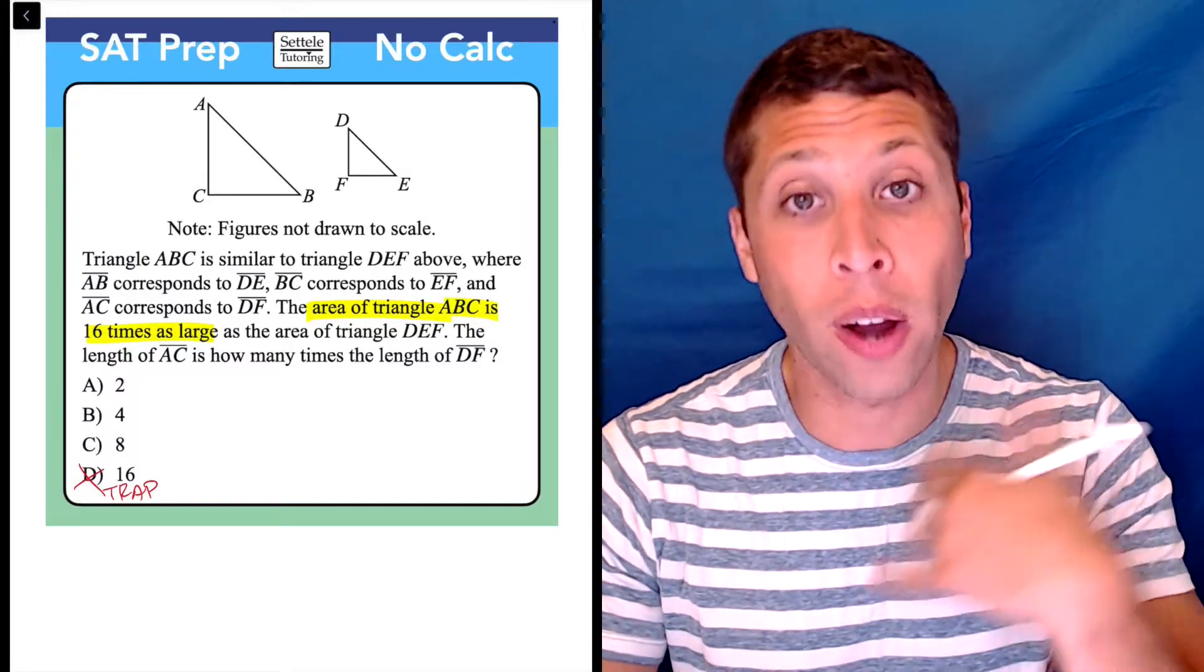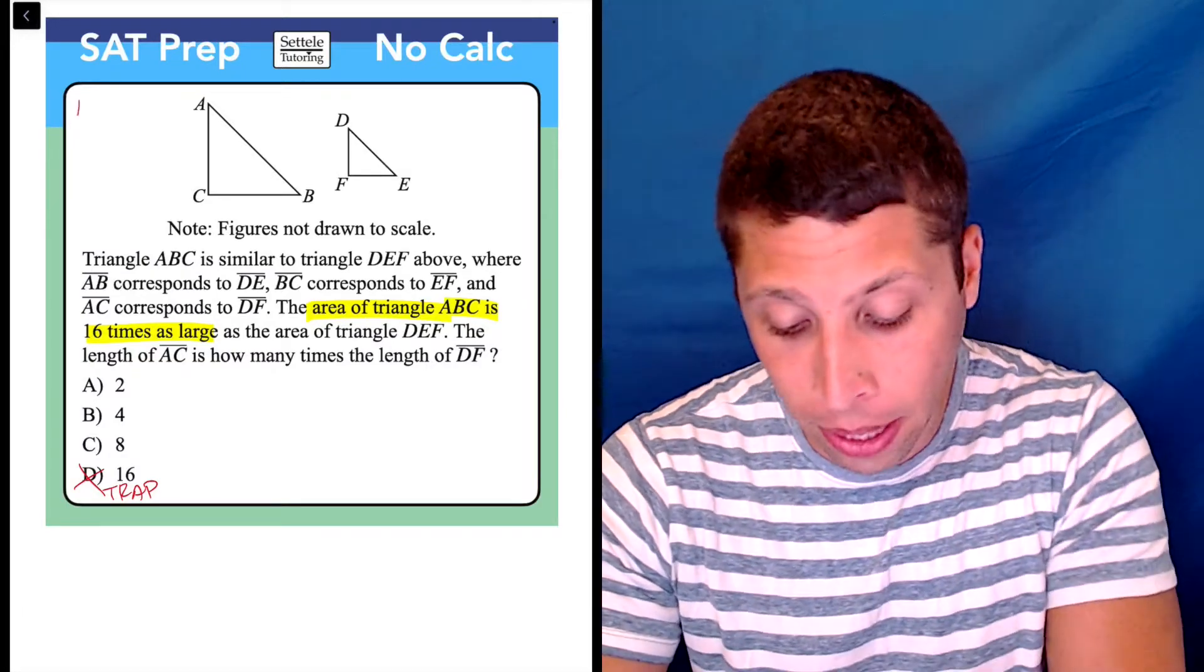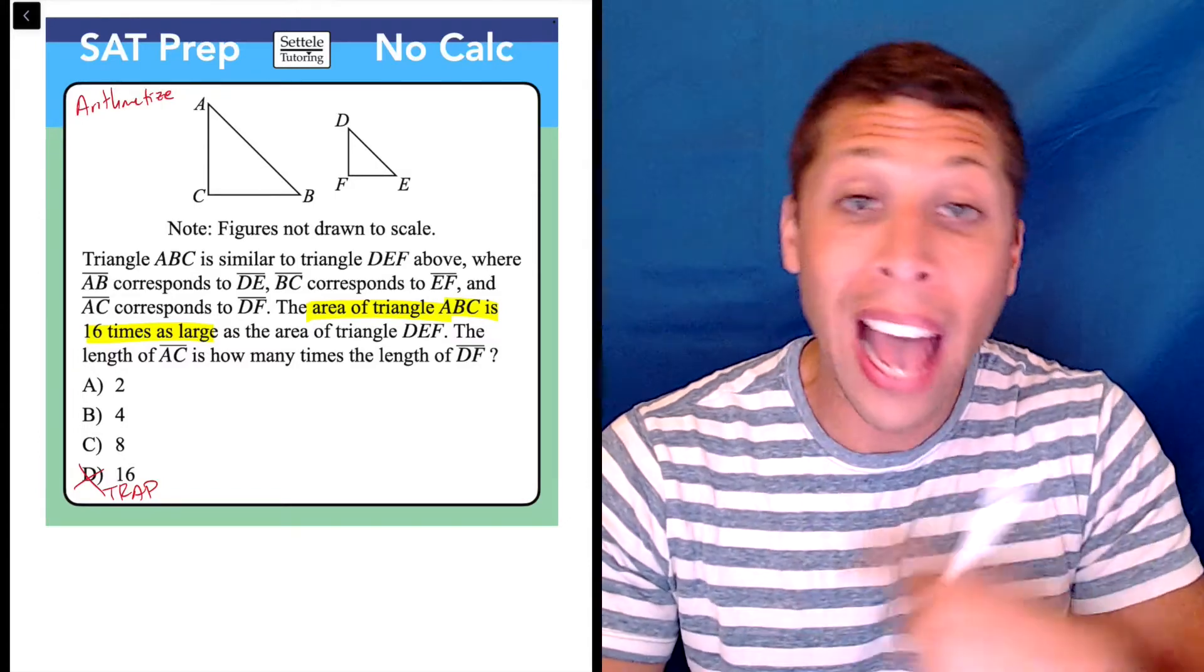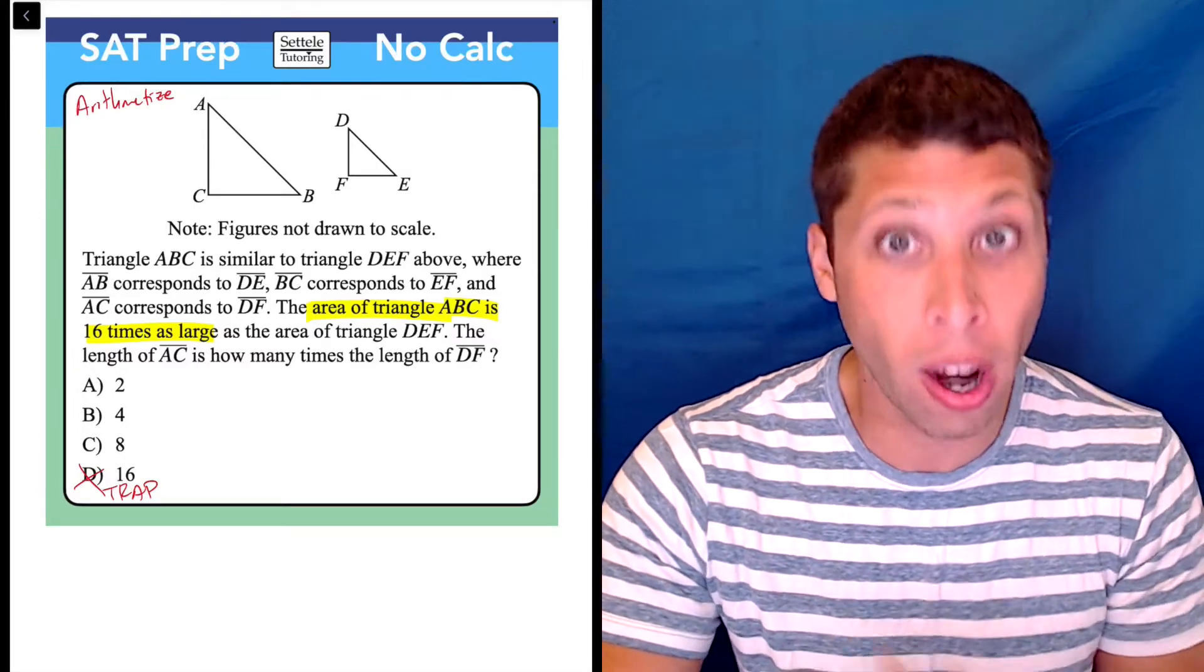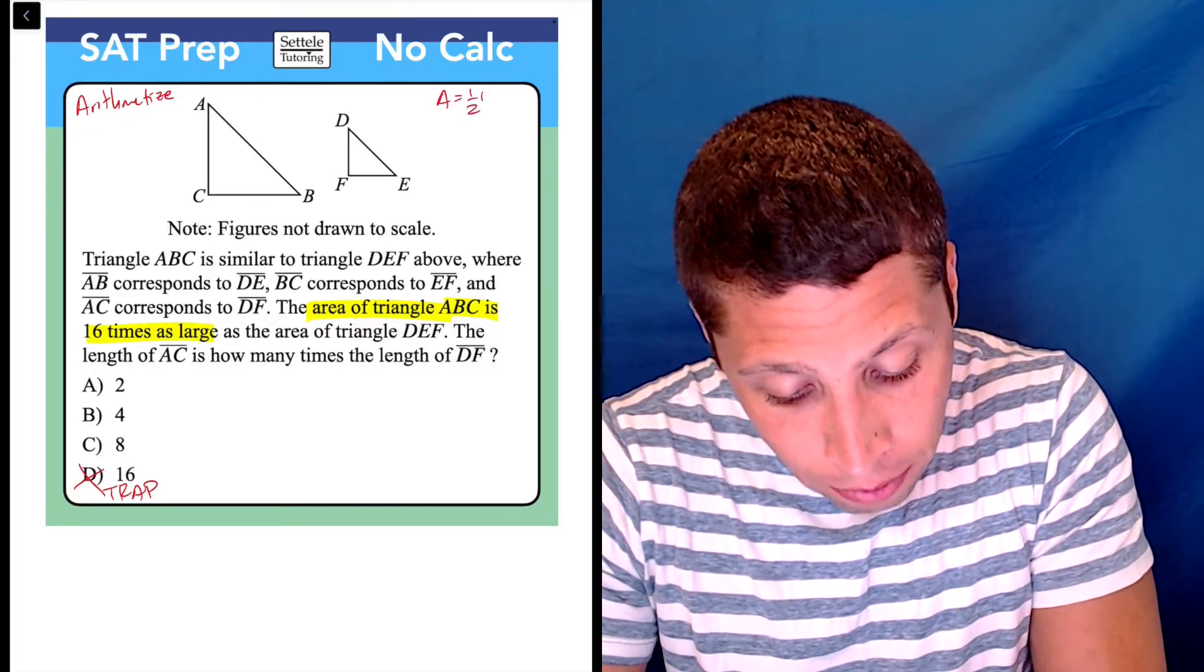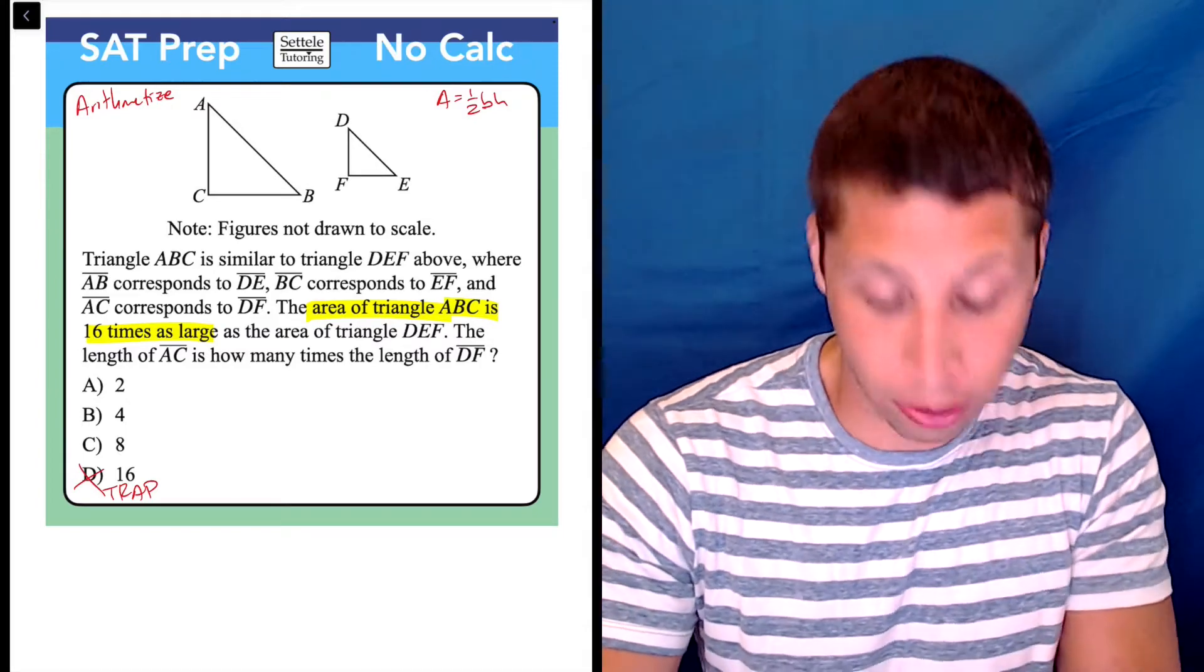My recommendation here is try to understand what's actually happening by arithmetizing and coming up with actual dimensions for these triangles. So what I would do here is I know that the area of a triangle is one half base times height, and these kind of look like right triangles.